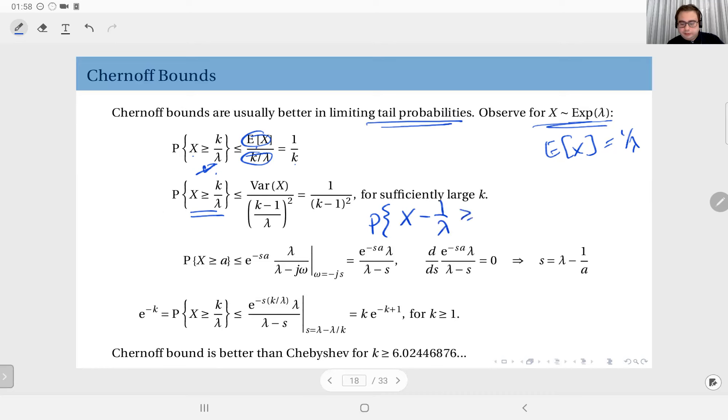exceeding k minus 1 over lambda. And I add to this, X minus 1 over lambda, less than or equal to minus k minus 1 over lambda. And here, I'm assuming k is large enough, so that this event never occurs. k is at least greater than 1, so that the probability of this event is 0.